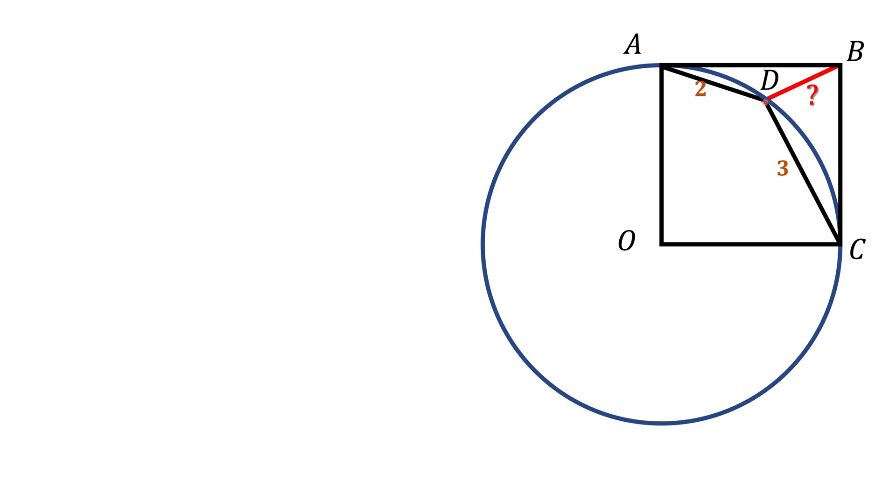We know side AD, we know side CD, we can find cosine of 135 degrees. It's not a big issue and that allows us to find the length AC, diagonal of the square. And diagonal of the square is radius times square root of 2, so that gives us the radius.